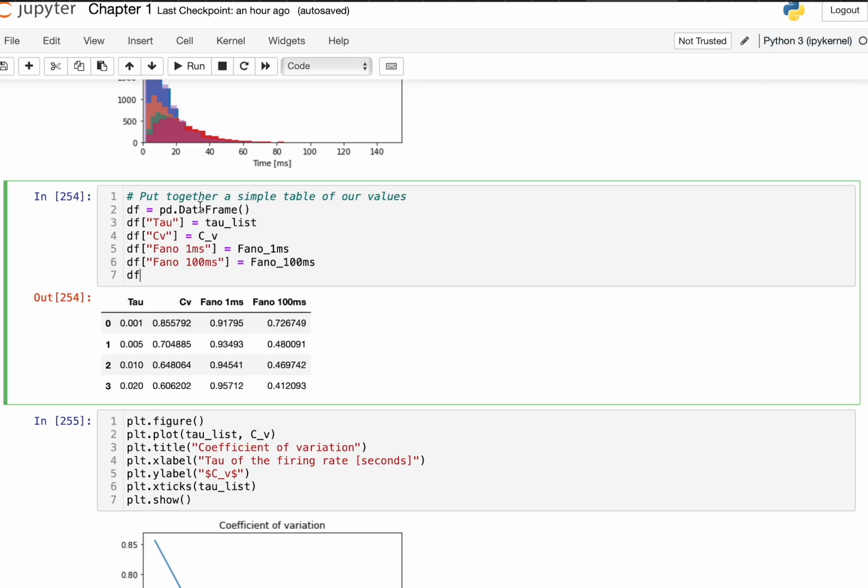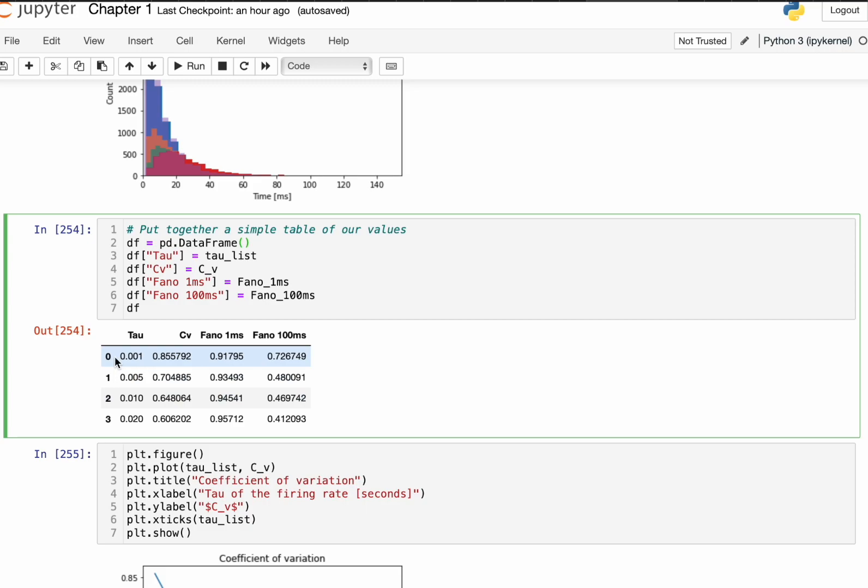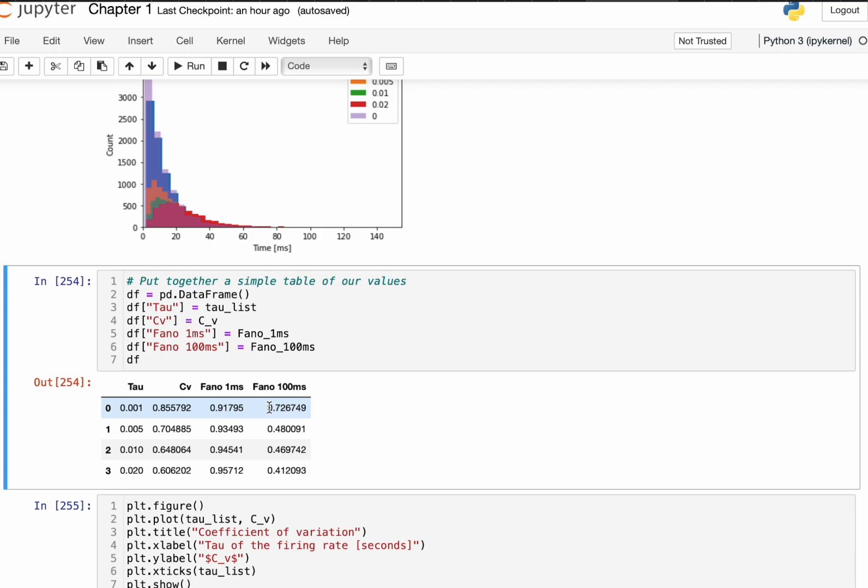Then, the next thing that we do is we are actually interested in finding what the Fano factor and the coefficient of variation is for the refractory periods here. So, we have a variety of these tau's, and the Fano factor is actually approximately one, and it gets a little bit better every time that we go up. So, that's pretty good. That suggests that the spikes definitely came from the Poisson process. The Fano factor for 100 milliseconds is not actually that good, but it's still kind of in the neighborhood of what we're hoping it to be.